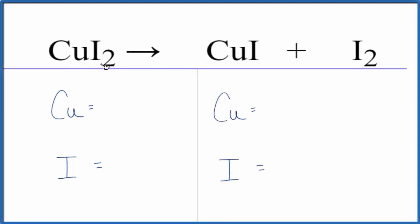In this equation we have CuI2 and it's decomposing. It's copper 2 iodide, decomposing into copper 1 iodide plus this iodine gas here.